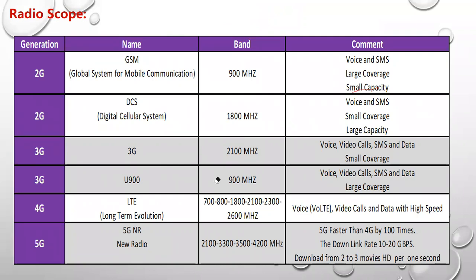The evolution started again and we came down with 3G. 3G first came with a band of 2,100 MHz. 3G gave the services of voice, video calls, SMS, and data — that is, internet. Yes, it was weak, but it was a dream to have mobile internet. With the 2,100 MHz band, the wavelength is less and has small coverage but provides more capacity.